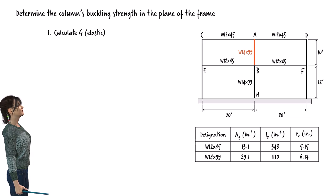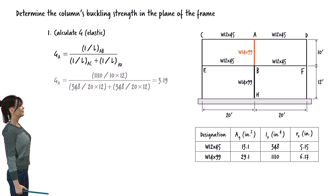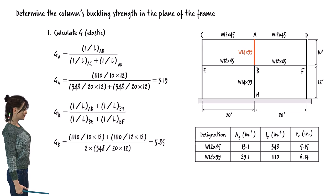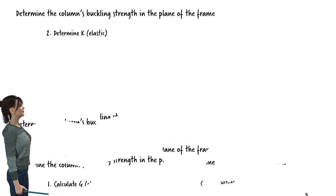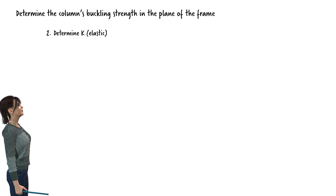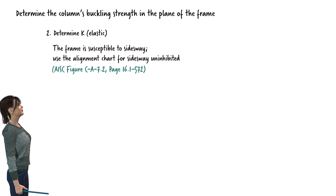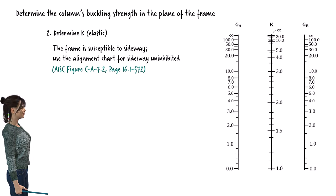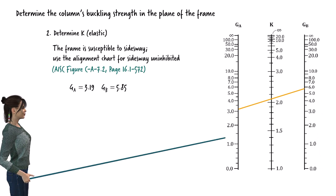We start by determining the stiffness ratios for the ends of the column assuming elastic behavior. Substituting the lengths and moments of inertia for the beams and columns connected to joint A, we calculate GA. For GB, we substitute the corresponding values. Knowing GA of 3.19 and GB of 5.85, we determine the effective length factor K using the AISC alignment chart. Since the frame is susceptible to sidesway, we use the alignment chart for unbraced frames, which gives a value of 2.1 for K.